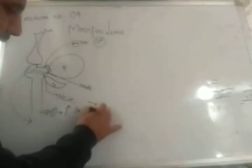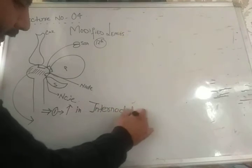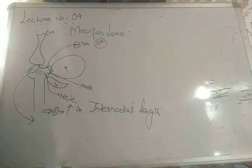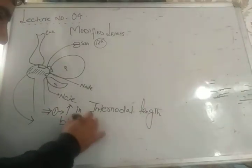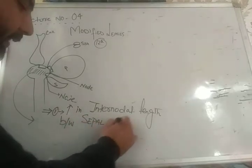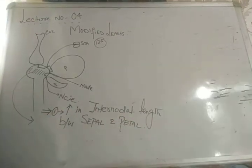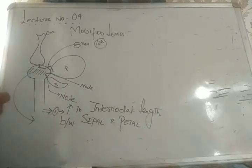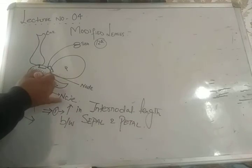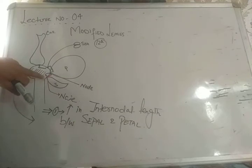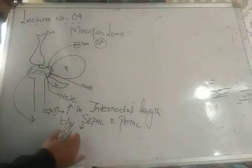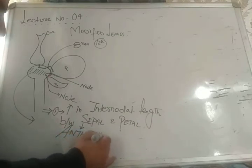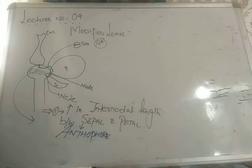Case number one: there is an increase in the internodal length between sepal and petal. If the internodal length between sepal and petal increases — I'll show this in red — this condition is called anthophore. Very simply: if there is increase in the internodal length between sepal and petal, this condition is called anthophore.